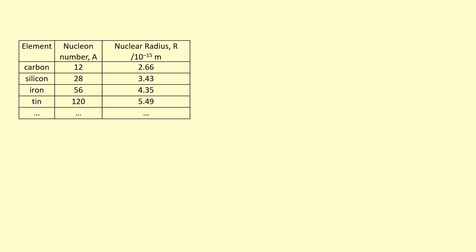If I do this for different elements - carbon, silicon, iron, tin, and so on - I can figure out the nuclear radius using these different methods. I've also got the nucleon number here, which is the number of protons plus number of neutrons in each nucleus.